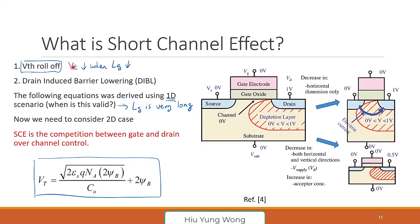Threshold voltage reduces when LG reduces. Another short channel effect I also want you to memorize: we talk about DIBL — drain-induced barrier lowering. It is telling you that the threshold voltage is going to reduce when the drain voltage increases. The drain induces some lowering on the barrier. Again, from this equation, I don't see that my threshold voltage should depend on the drain voltage — but it does.